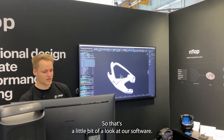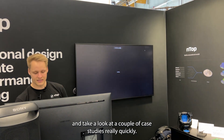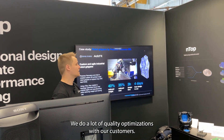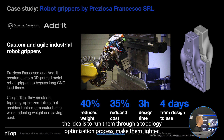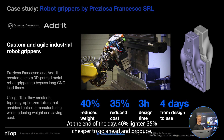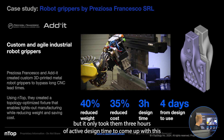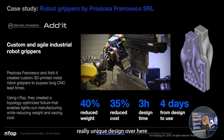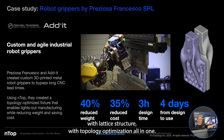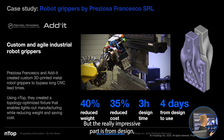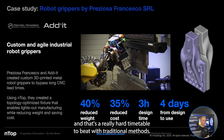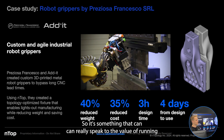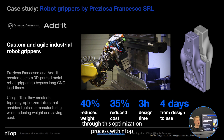Let's come back to the slides and look at a couple of case studies quickly. We do a lot of topology optimizations with our customers. One that's really interesting is these custom robotic grippers. The idea was to run them through a topology optimization process and make them lighter. At the end of the day: 40% lighter, 35% cheaper to produce. It only took three hours of active design time to come up with this unique design featuring lattice structure and topology optimization all in one — and from design start to manufactured and on the robot was just four days.